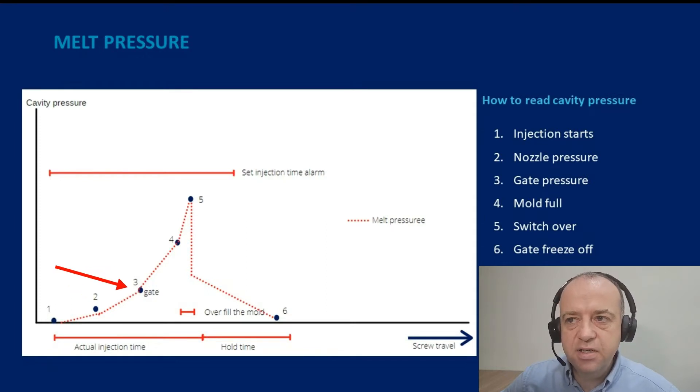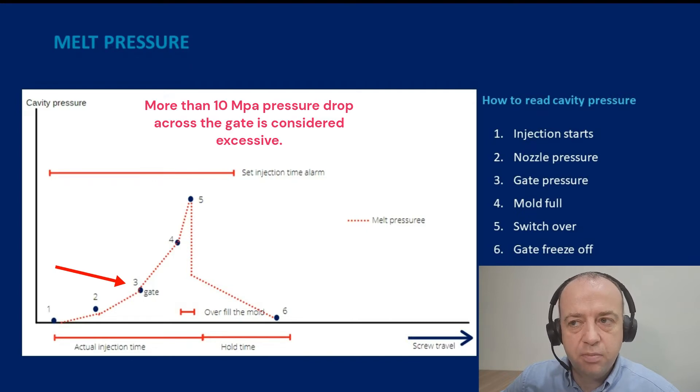Again, in through the feed system and into the gates you may see a deflection in the curve again. This is where we're dropping pressure across the gate system. No more than 10 bars of pressure drop across the gate would be normal; anything more than that is really excessive.